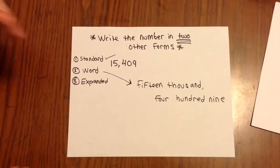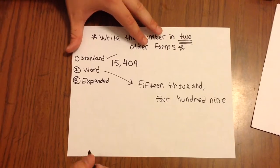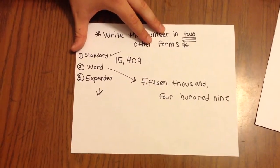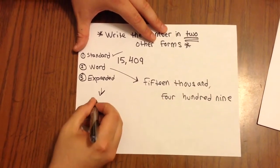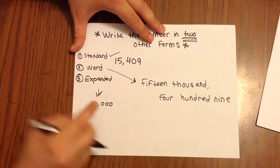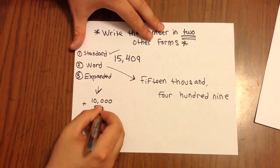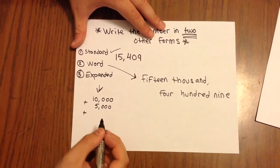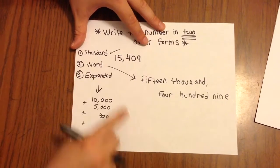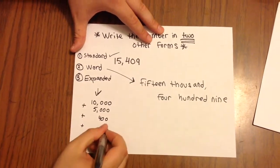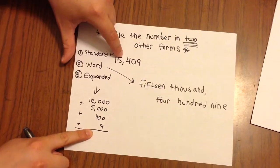Okay, so expanded form, there were two different ways we talked about in class. And the way that most people were familiar with looks something like this. So you had 15,409. So you went ahead and you did 10,000 plus 5,000 plus 400. And we can just skip the zero because the zero has no value. So we'll just skip all the way down to nine. And so this was one way that we could write expanded form for 15,409.